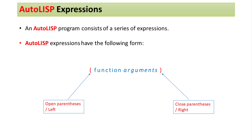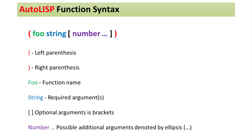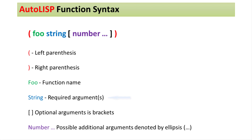AutoLISP expression: an AutoLISP program consists of a series of expressions. AutoLISP expressions have the following form — open parenthesis, close parenthesis — and in between those parentheses, the function and its arguments are placed. AutoLISP function syntax: left parenthesis, function name, required arguments, optional arguments in square brackets.